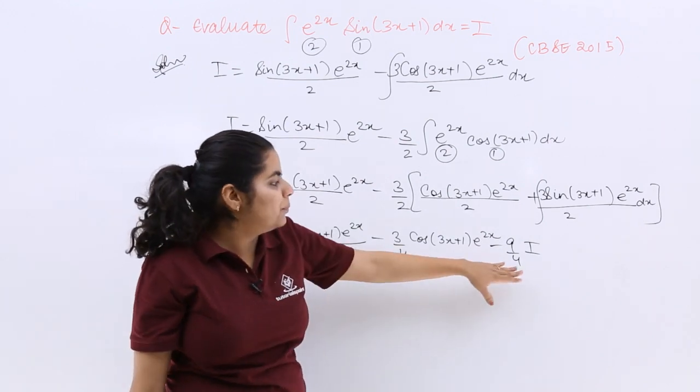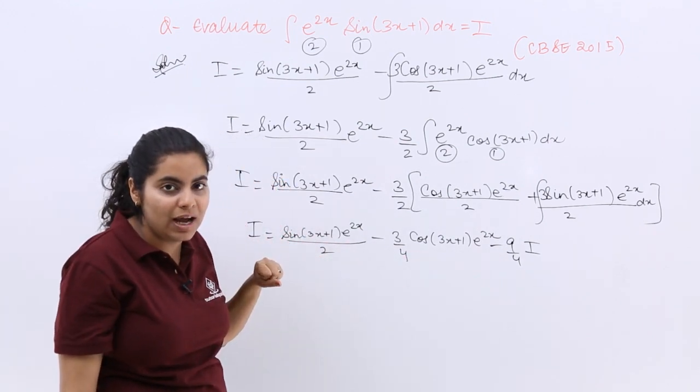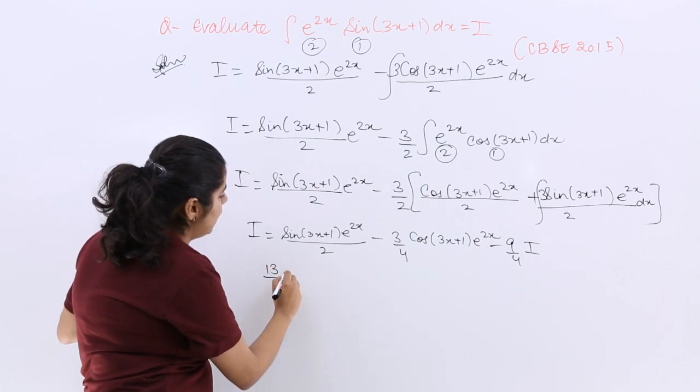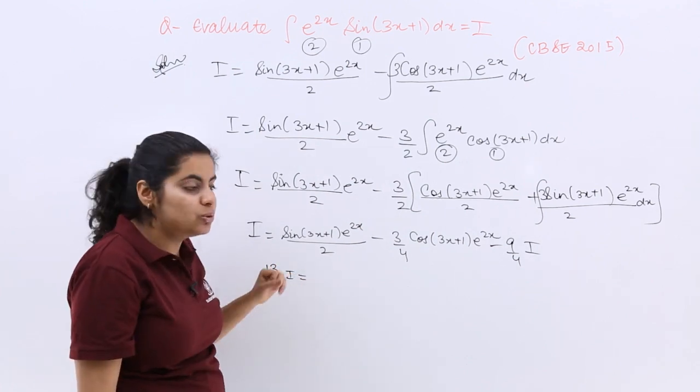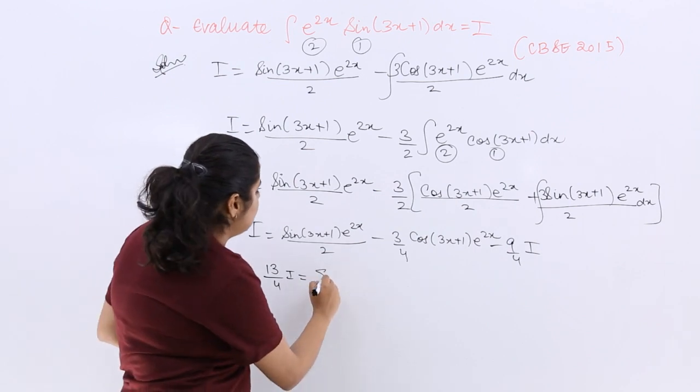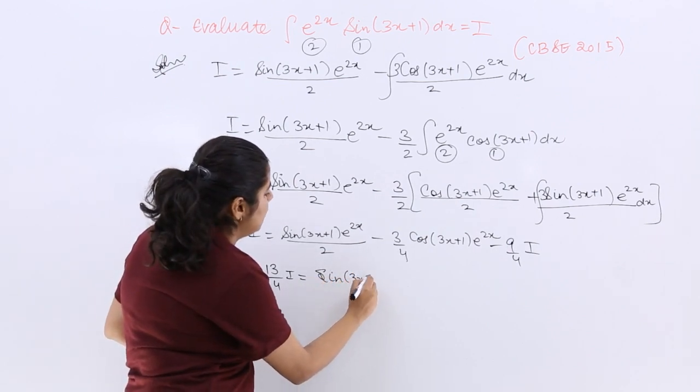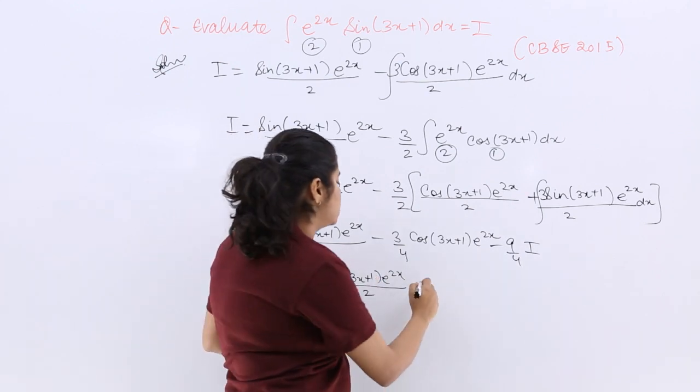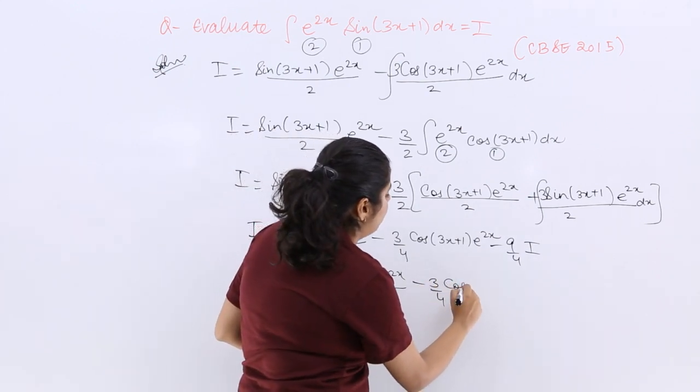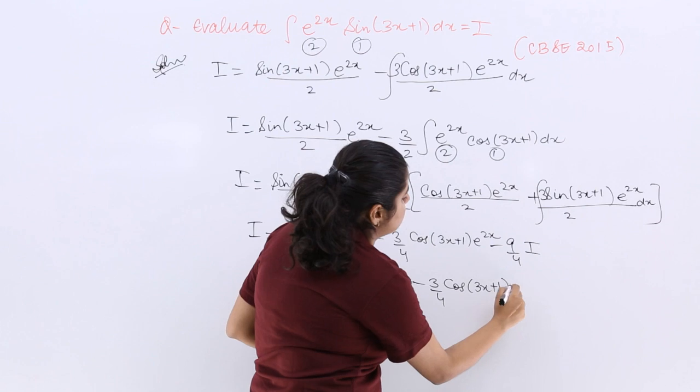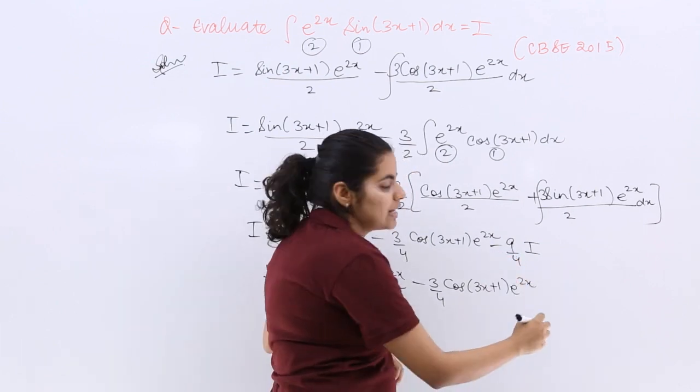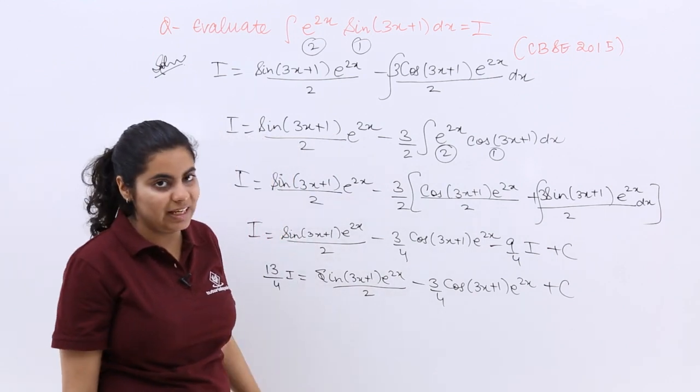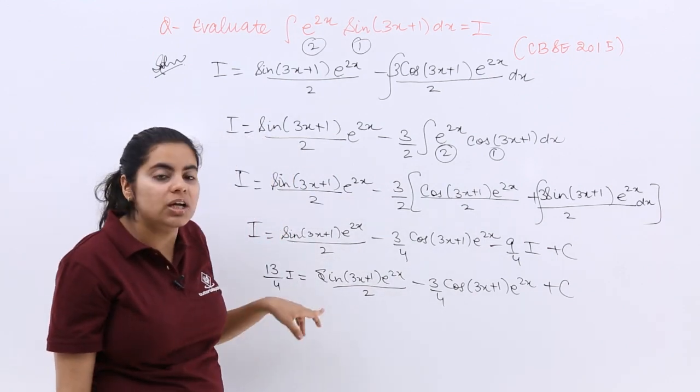Now what is I plus 9 by 4I? It is nothing but 13 by 4I is equal to sin(3x+1) e raised to the power 2x upon 2 minus 3 by 4 cos(3x+1) e raised to the power 2x, and plus C everywhere due to the constant of integration.